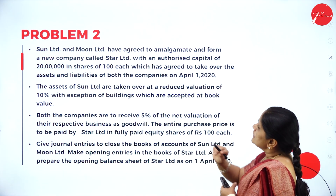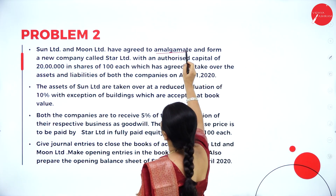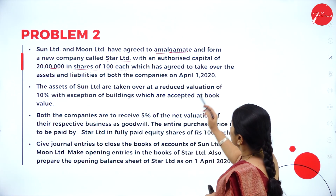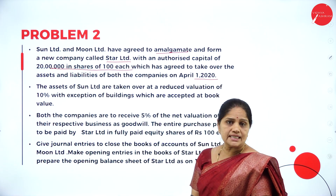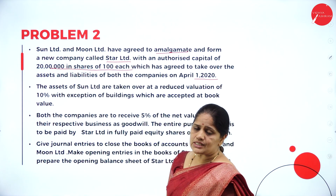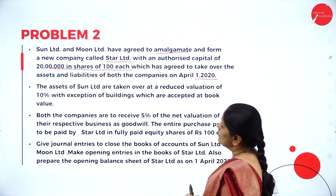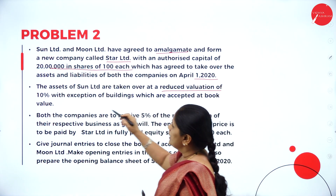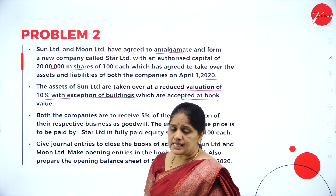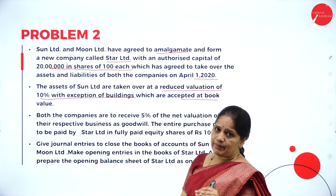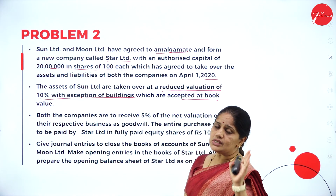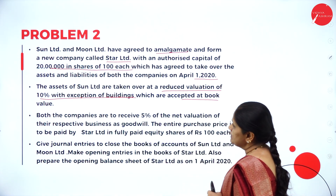Sun Limited and Moon Limited have agreed to amalgamate and form a new company called Star Limited with an authorized capital of rupees 20 lakhs in shares of rupees 100 each, which has agreed to take over the assets and liabilities on April 1st 2020. The assets of Sun Limited are taken over at a reduced valuation of 10%, with the exception of buildings which are accepted at book value.